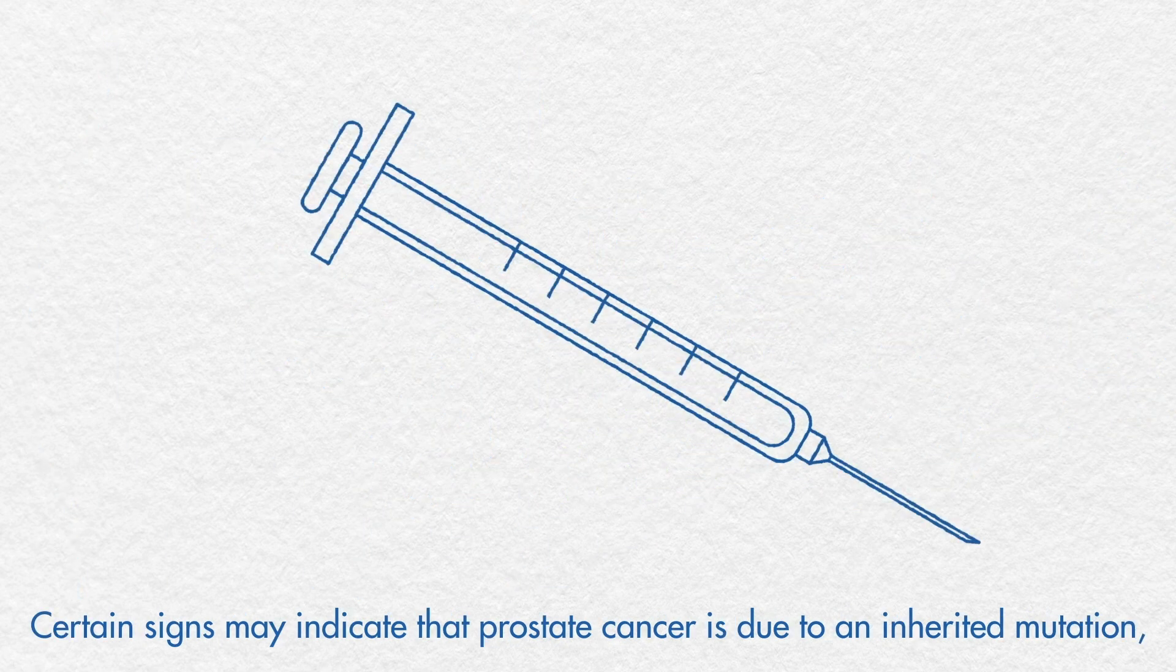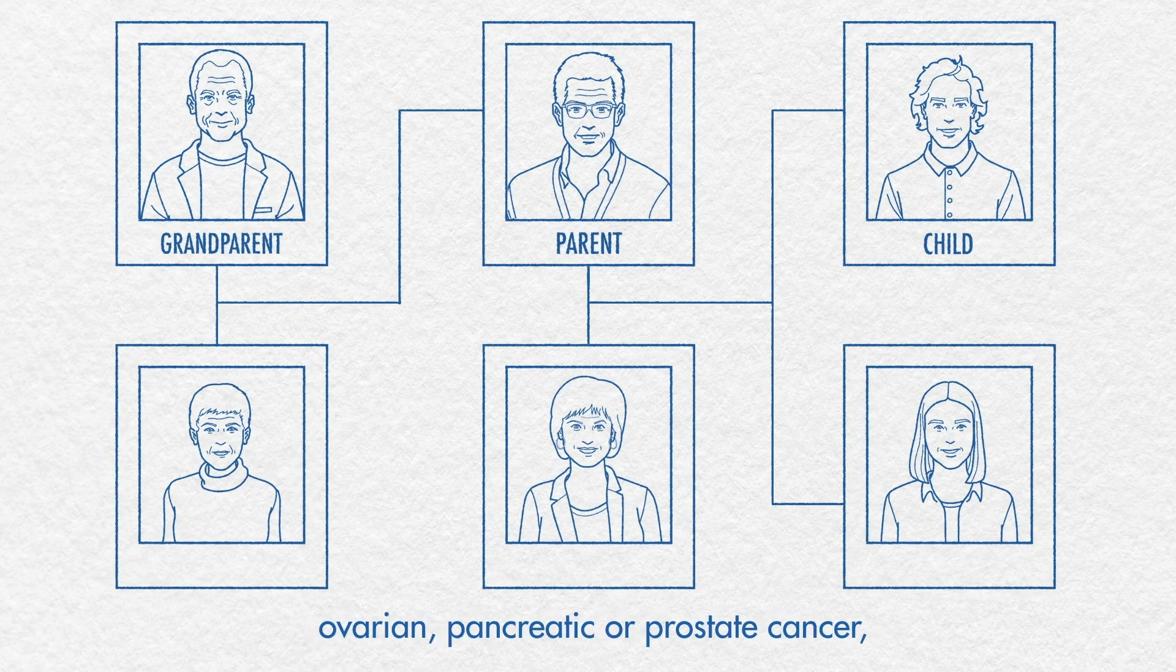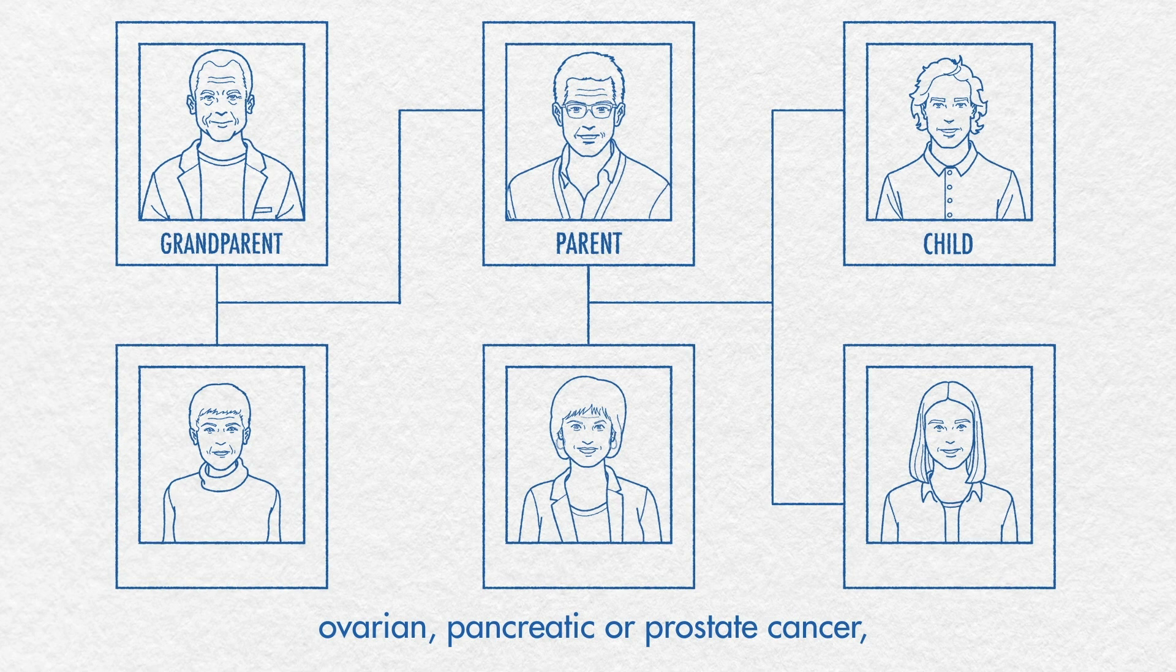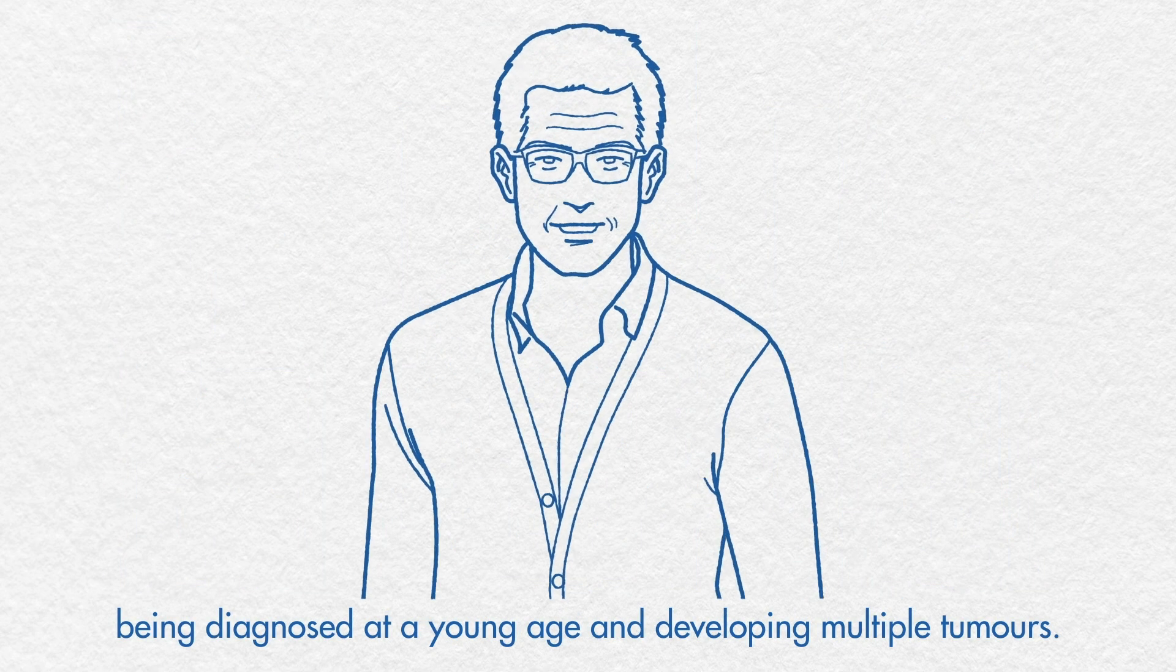Certain signs may indicate that prostate cancer is due to an inherited mutation, such as having a family history of breast, ovarian, pancreatic or prostate cancer, being diagnosed at a young age and developing multiple tumors.